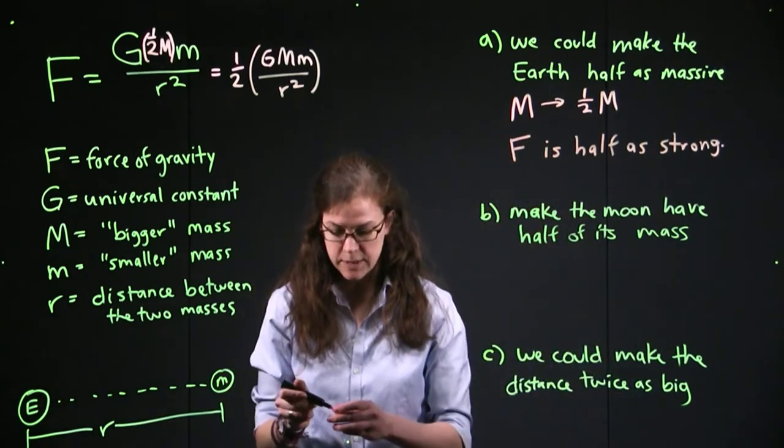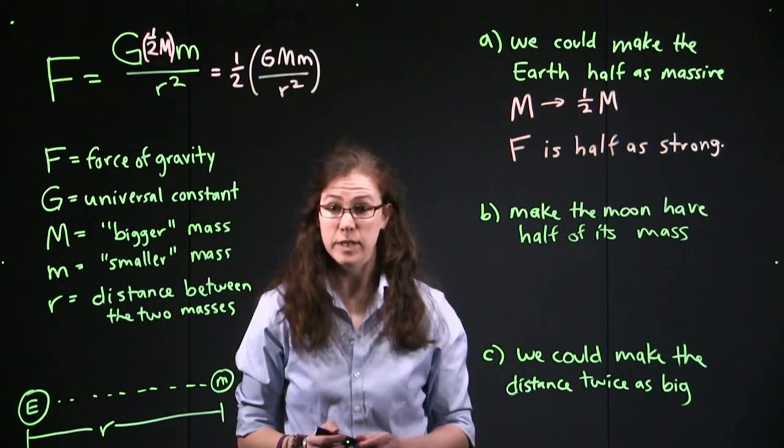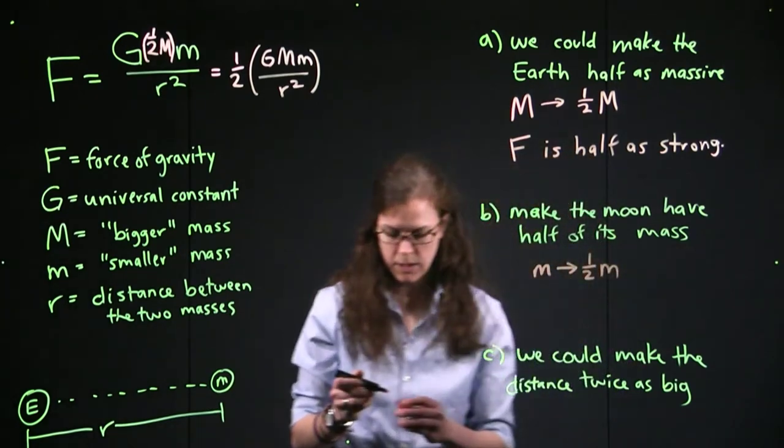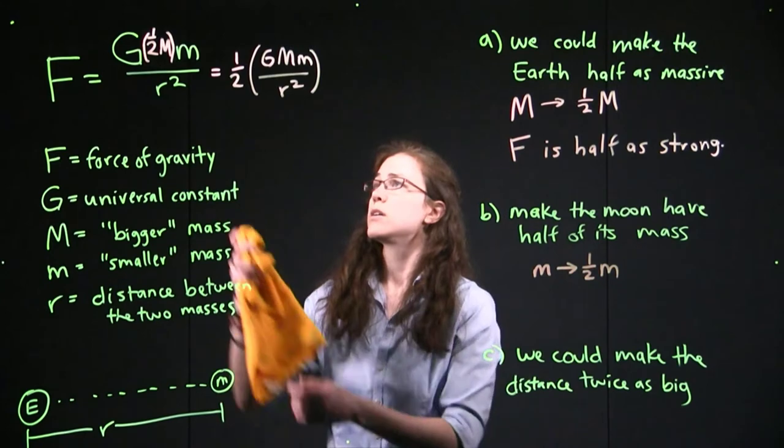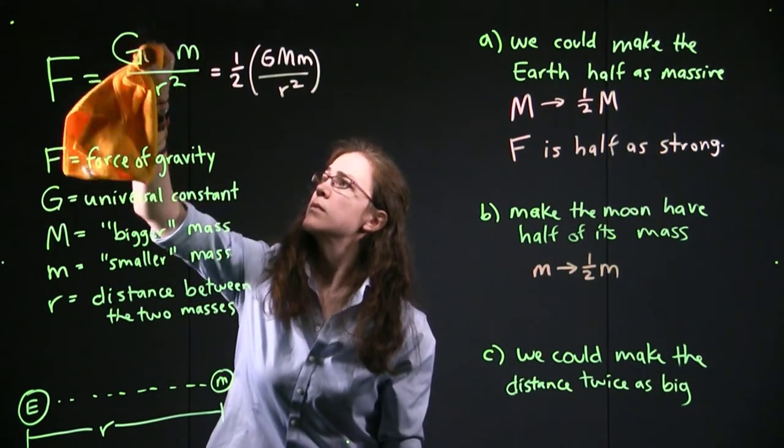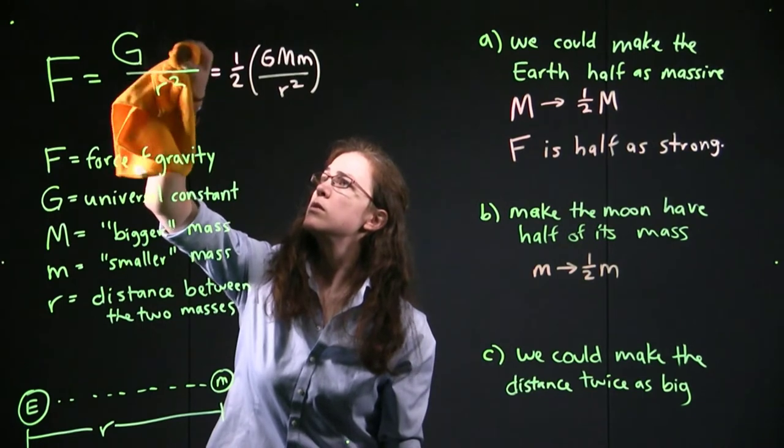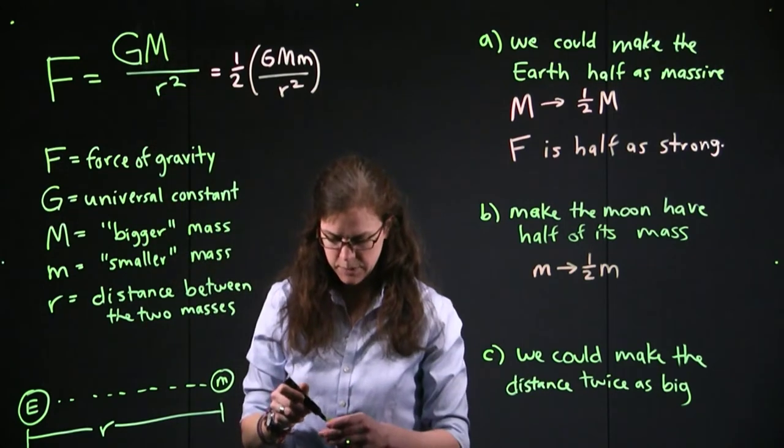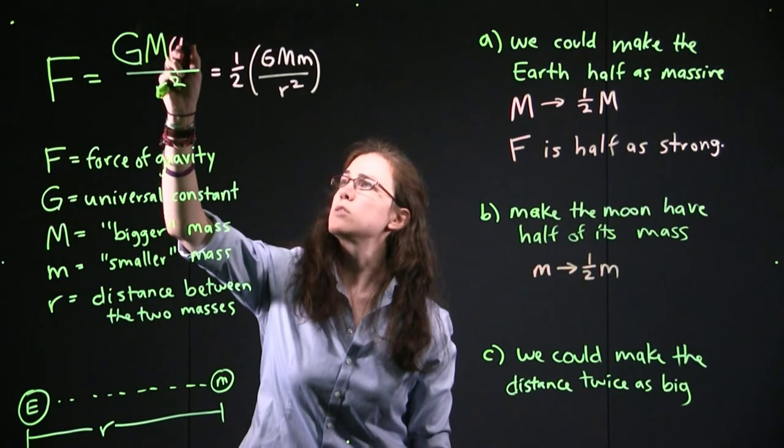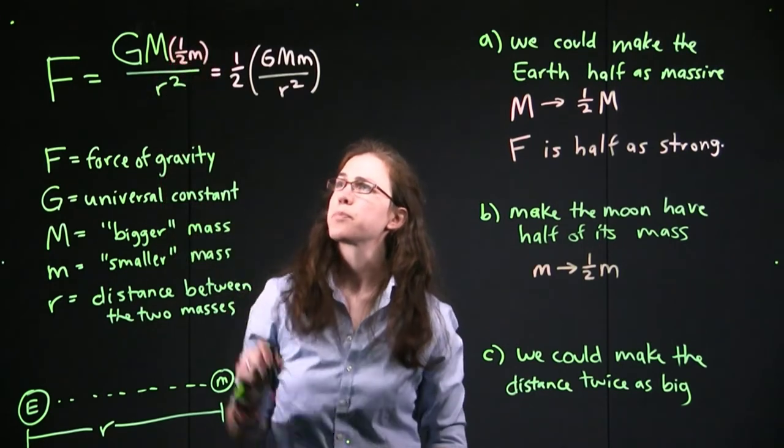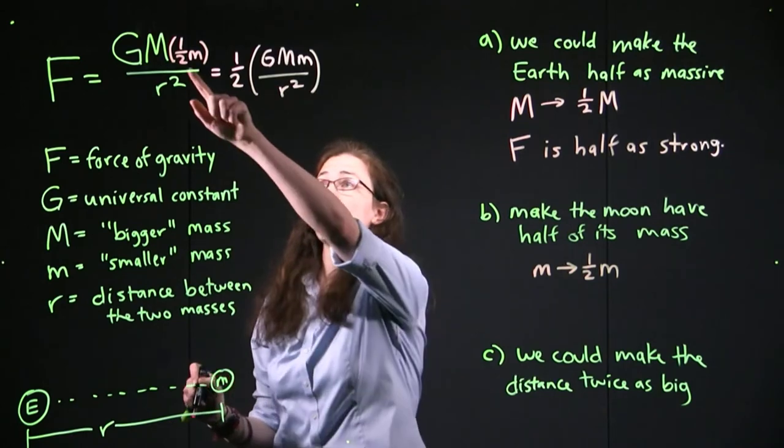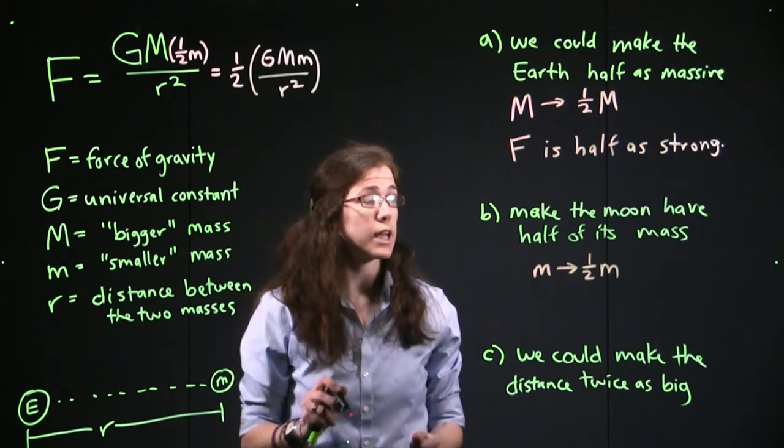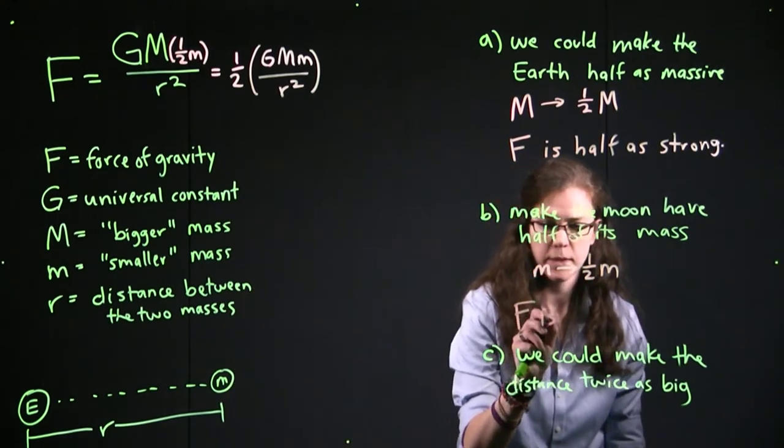So what happens if instead of that change, we make the Moon have half of its mass? We would be affecting the little mass, m. And so if we go back to our original equation, we can put the Earth's original large mass. But now we're going to say that the Moon is only half of that little m. And yet look what we have. We have one half times G big M little m over r squared. And so yet again, we've made the force half as strong.